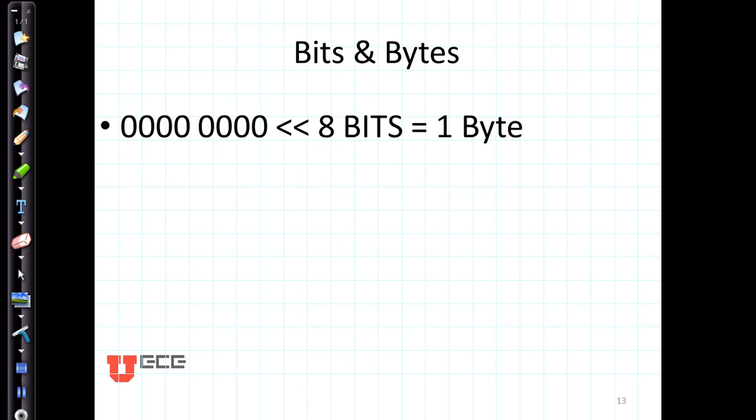We talk about bits and bytes, and I'm sure that you have heard about these in normal use. So a bit is each one of these individual things where the light could be on or off. I've shown eight bits here. Eight bits total up to one byte.